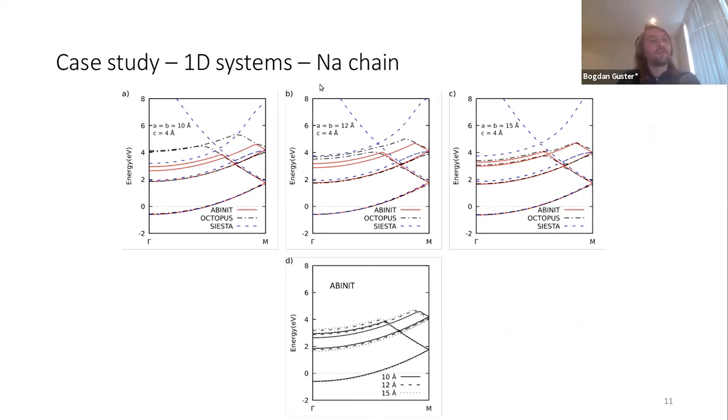Now just to look at the 1D system, I've considered a sodium chain in this situation. For different box sizes in-plane, we've looked at how the truncation is affecting the band structure along the chain direction, of course the only periodic direction.